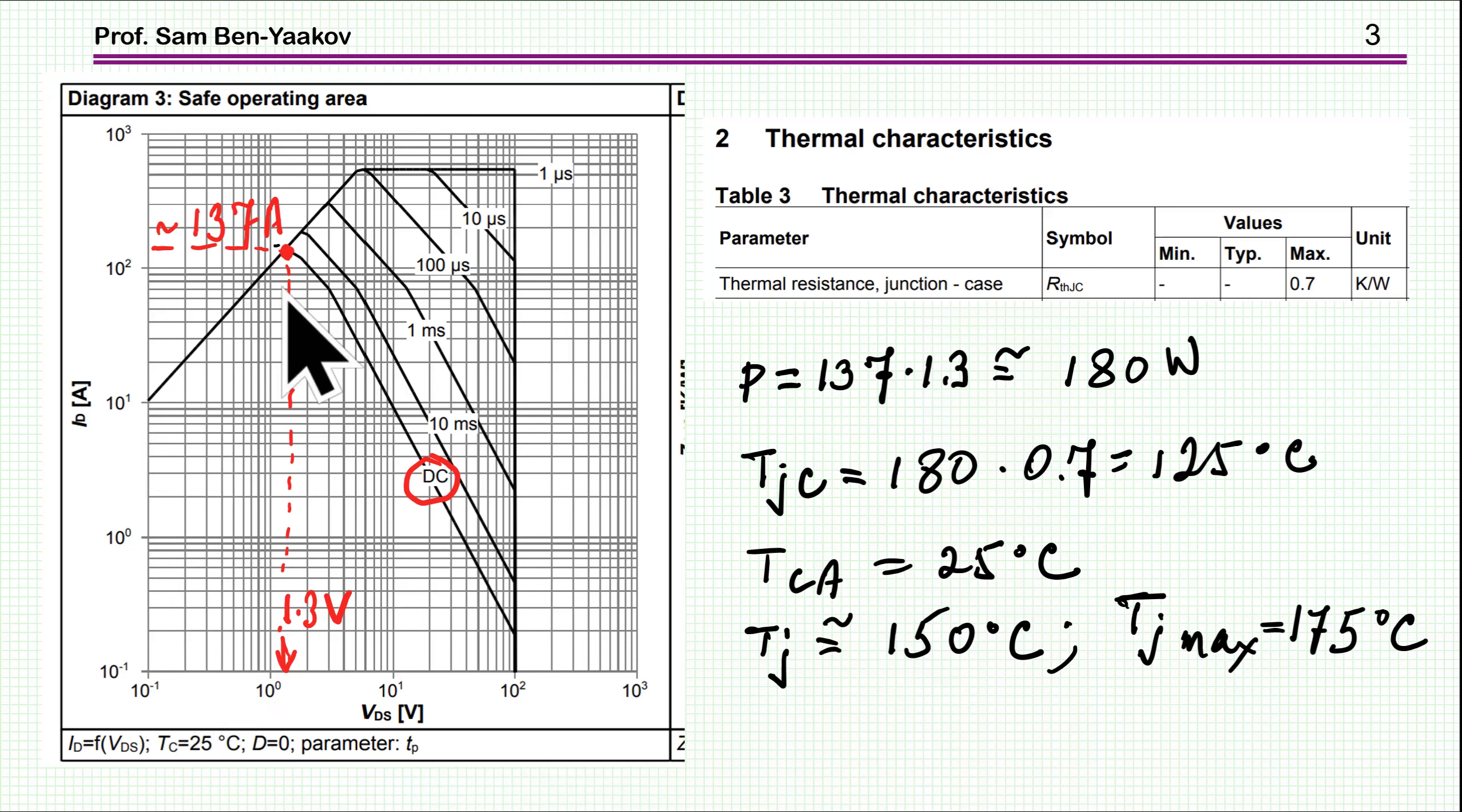Here we are reaching a point in which the maximum is 137 for DC or continuous operation. This limit is when the voltage across the transistor will be 1.3 volt according to this straight line. So the power dissipated at this point with 137 amp is 180 watt.